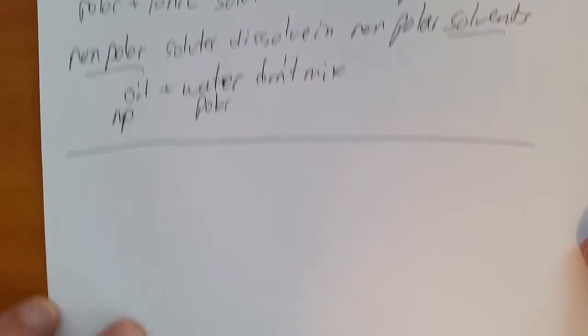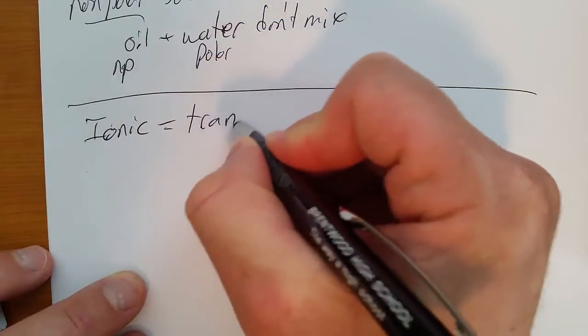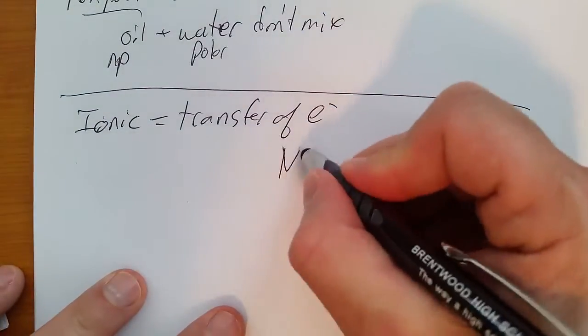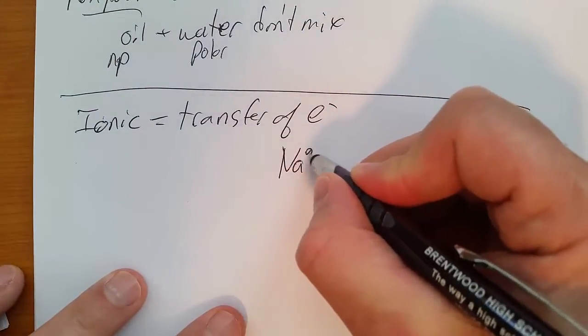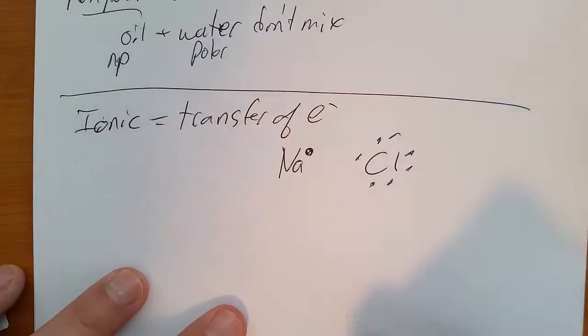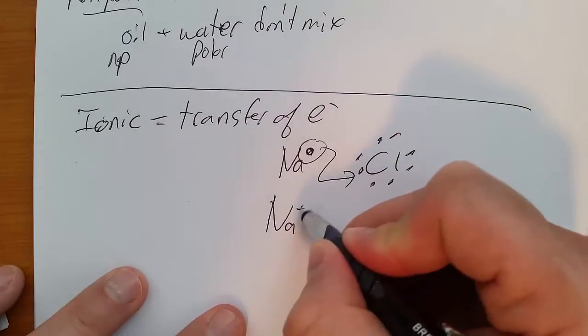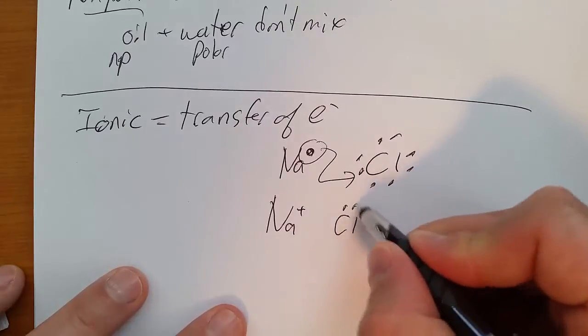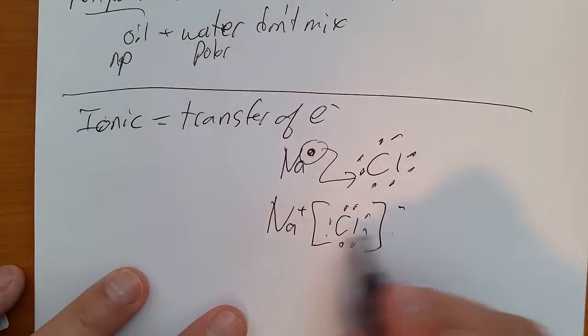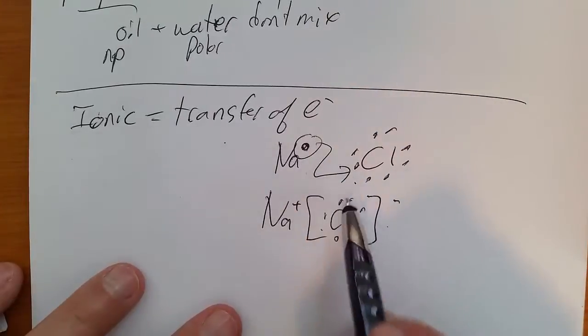A little more about chemical bonds. You have to remember ionic is transfer of electrons. For example, if we have sodium with one electron, chlorine with seven. Sodium gives this electron to the chlorine. And we end up with Na plus bonded to a Cl minus. They stick to each other because the opposite is in charge. But it's a transfer of electrons. This electron is completely given away.